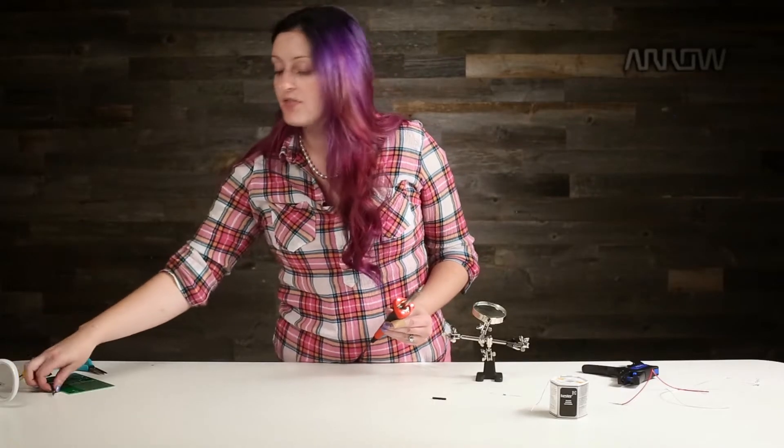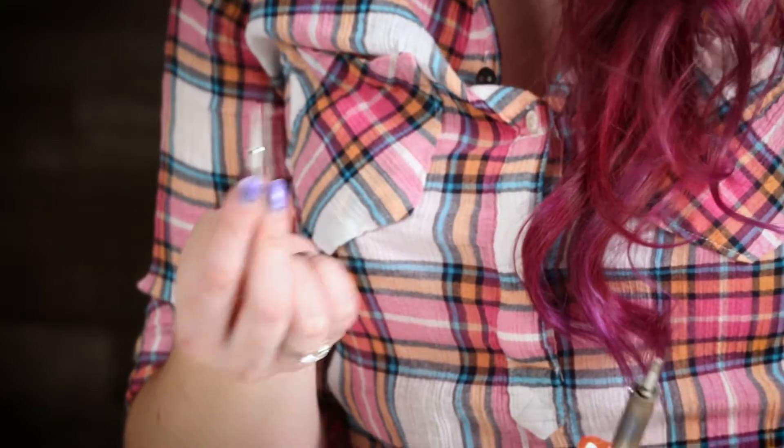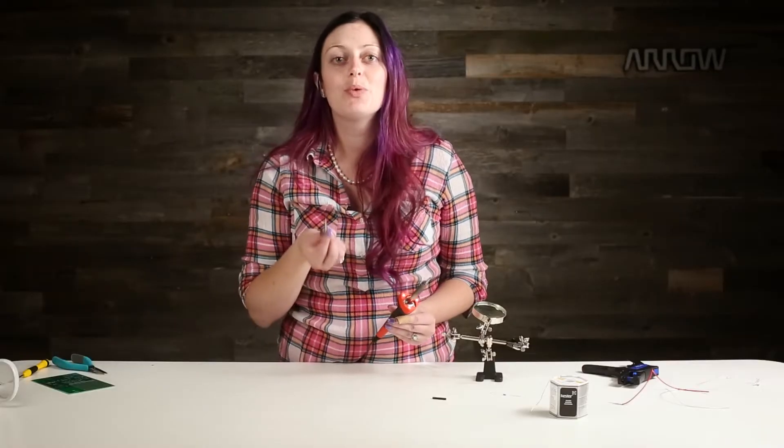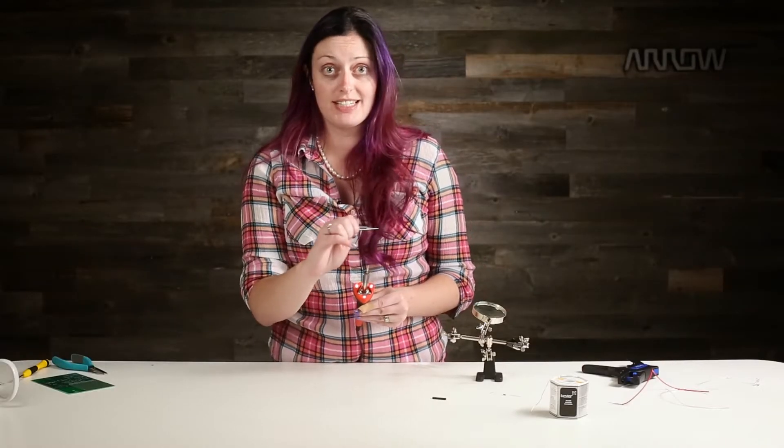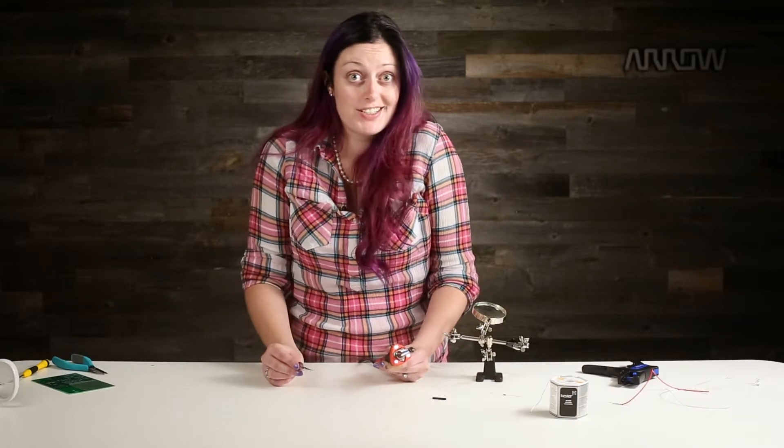Now it's tempting to go straight for this tiny tip because it looks like it'll be more precise, but thermodynamics are not kind here. This tip won't get as hot as a slightly wider surface like this chisel tip. It might make soldering a little bit trickier to start just because it's not as hot.